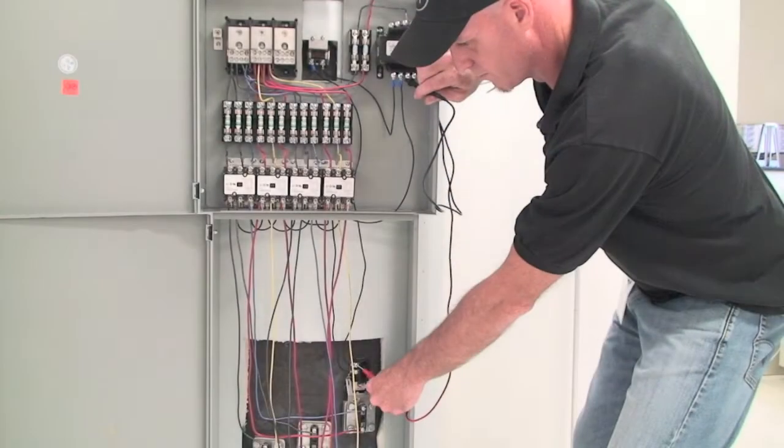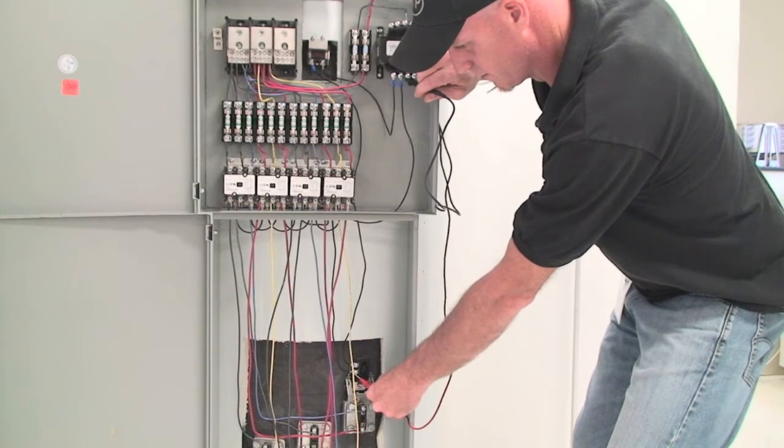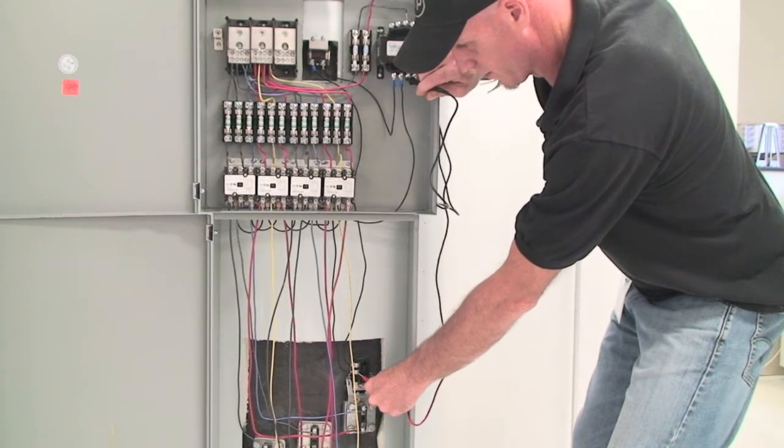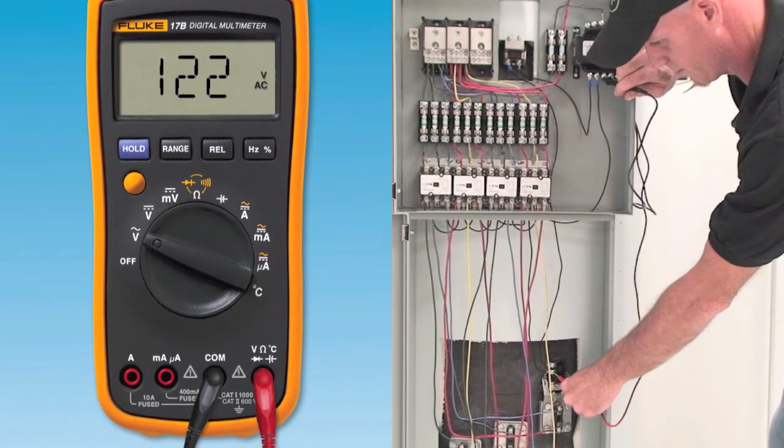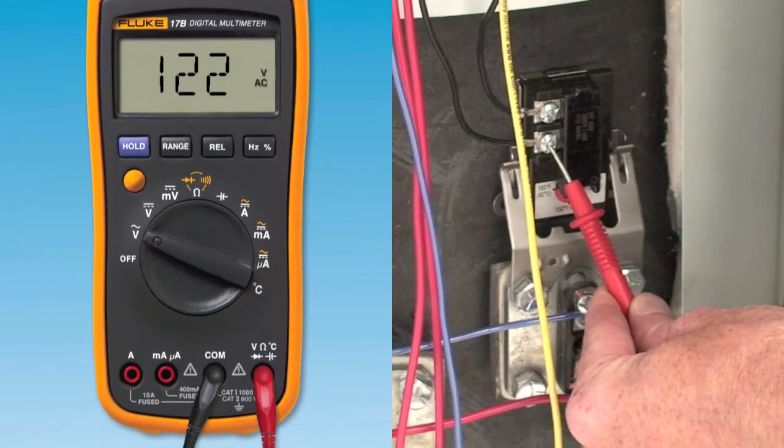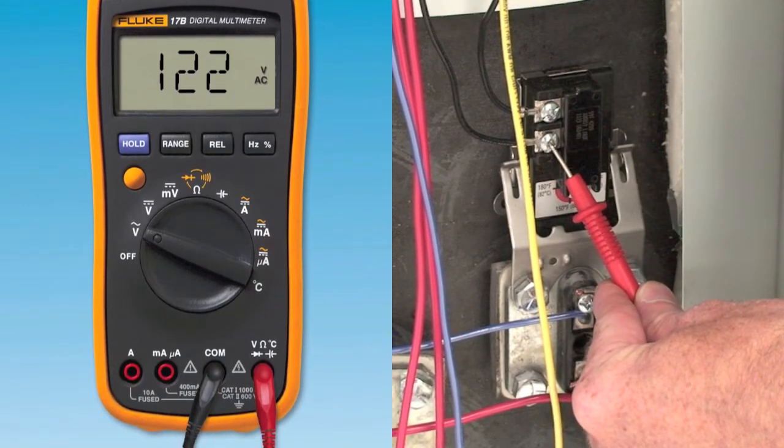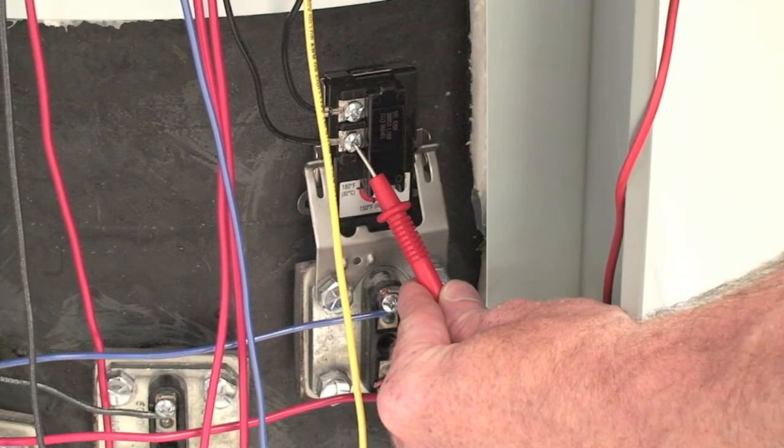If 120 volts AC is present, move the meter lead from the upper terminal on the thermostat to the lower terminal on the thermostat. If 120 volts AC is present on the lower terminal, the thermostat is in the closed position and is operating properly.